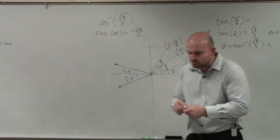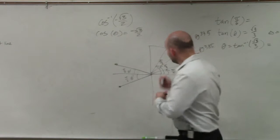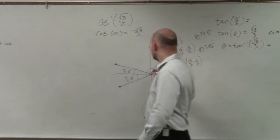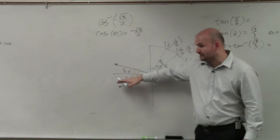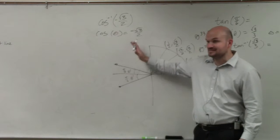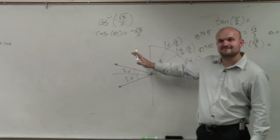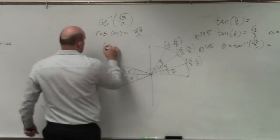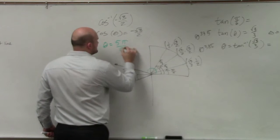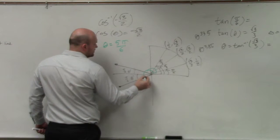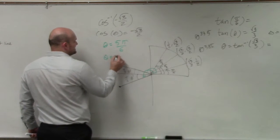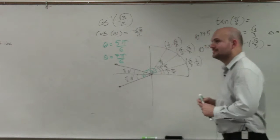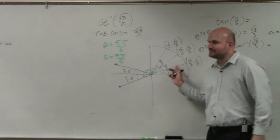So what could be my two possible angles? I could have from here to here — that's basically half a circle, pi, but less pi over 6. Does anybody know what that angle would be? 5 pi over 6. Yes, in radians that would be 5 pi over 6. So theta equals 5 pi over 6. Or we could do the other angle, which would be 7 pi over 6.